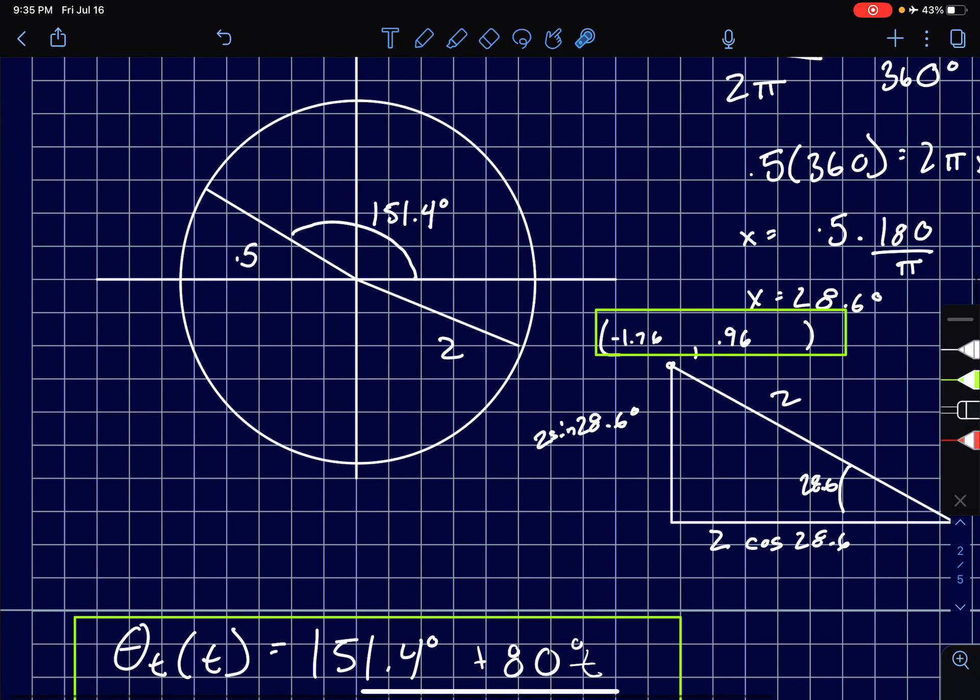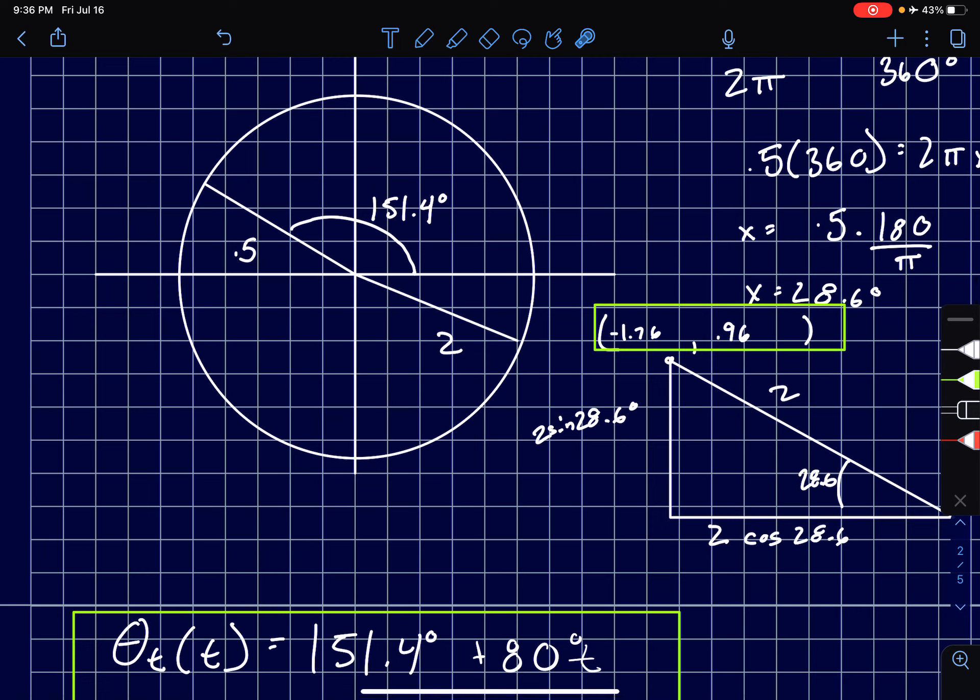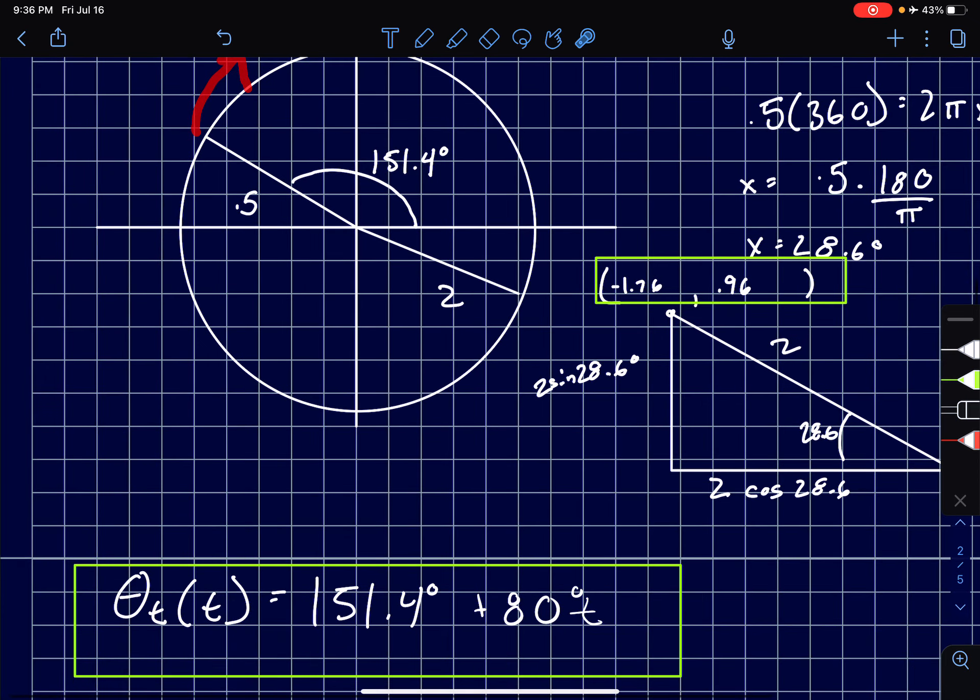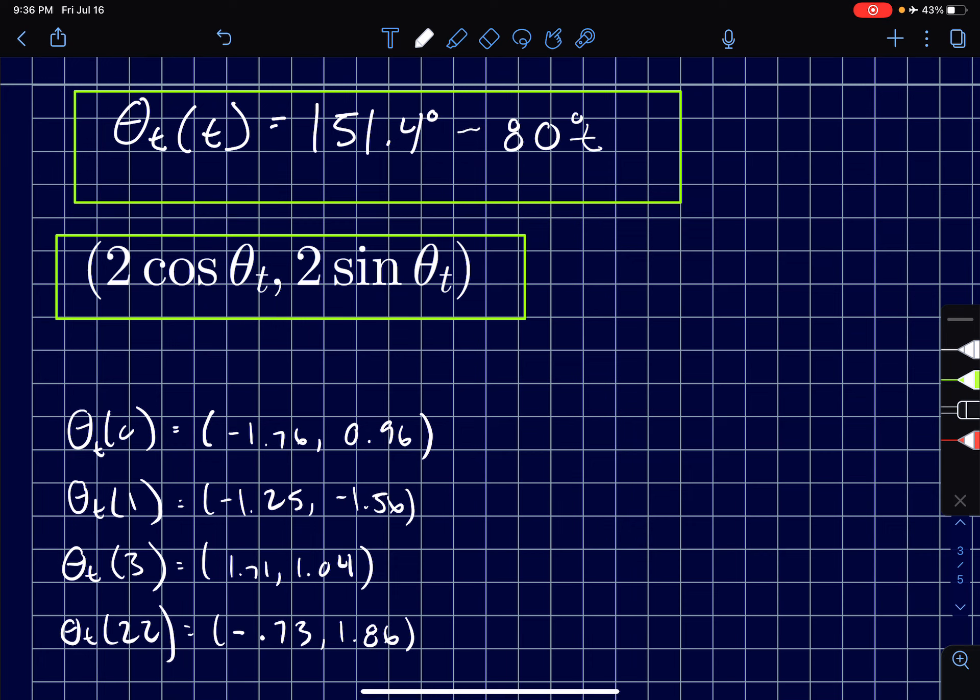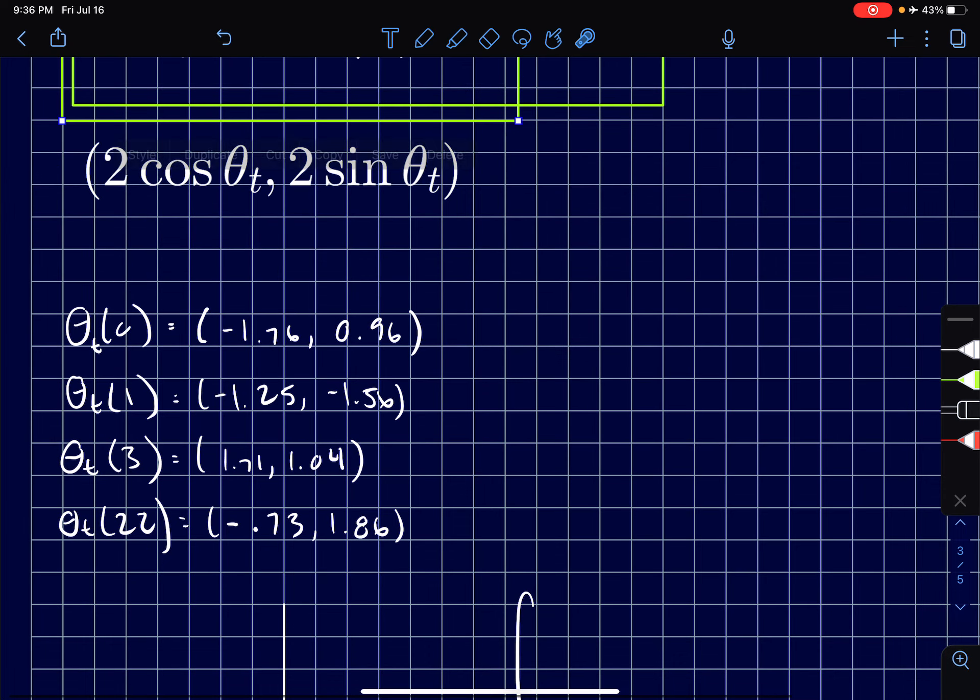Also what's unique about this problem from the others is that now the bug is traveling in this direction. So what we have to do is, I actually wrote this down wrong, this has to be minus 80 degrees for every second starting at 151.4, and we get these answers here. And that should be it, thanks.